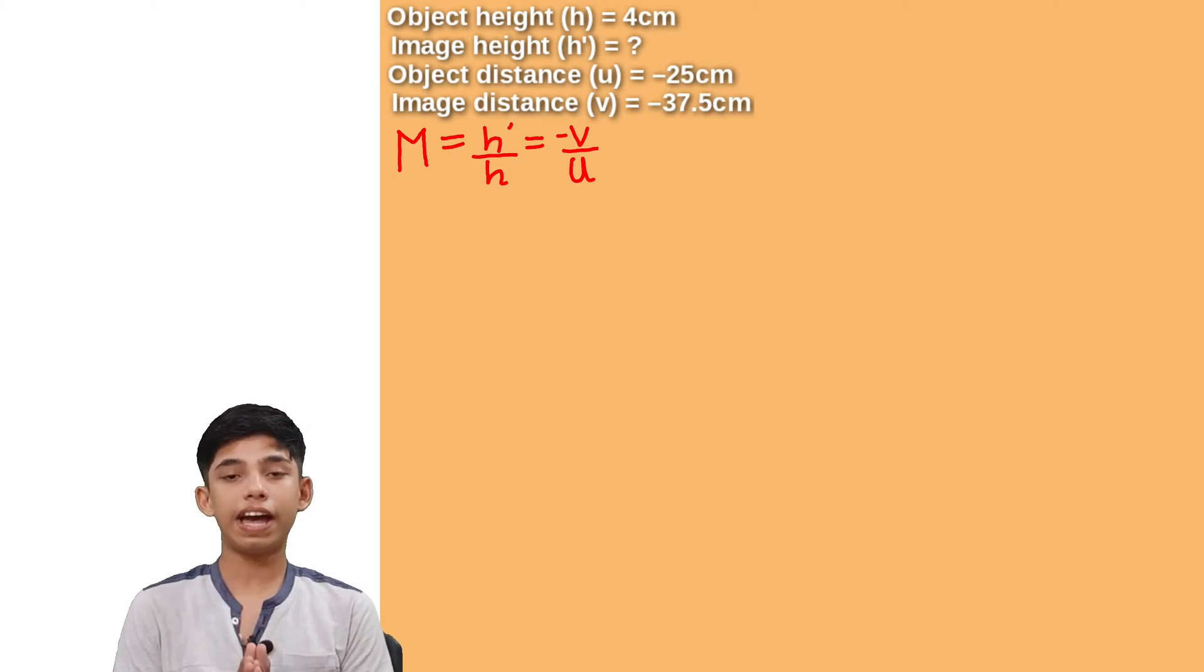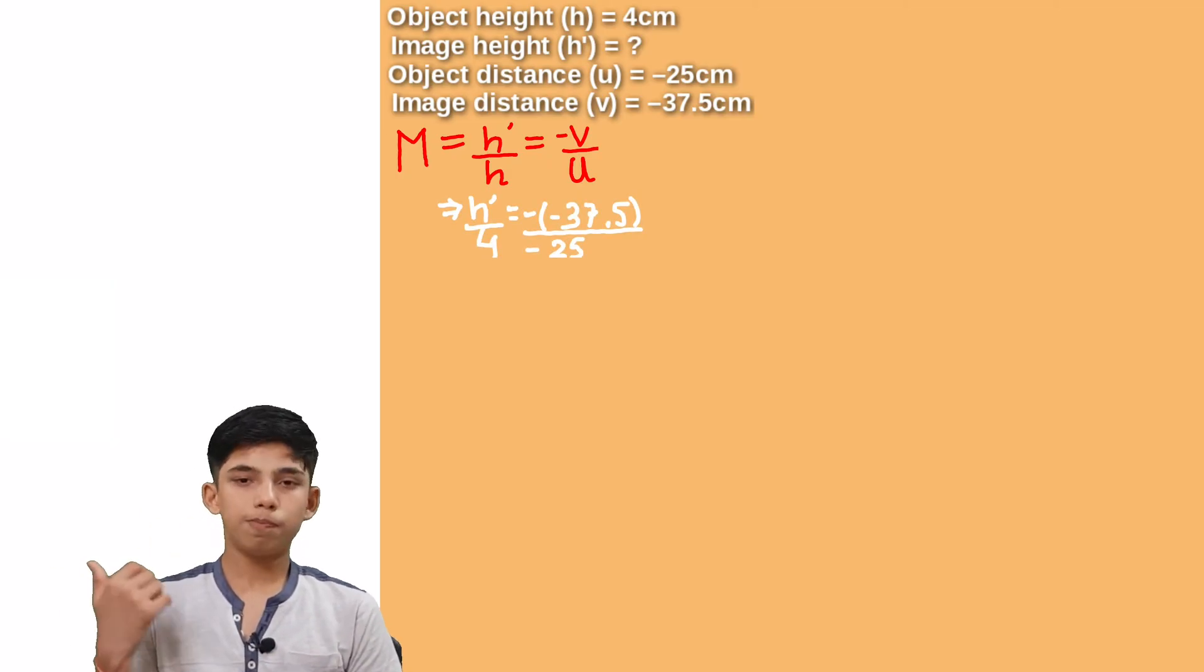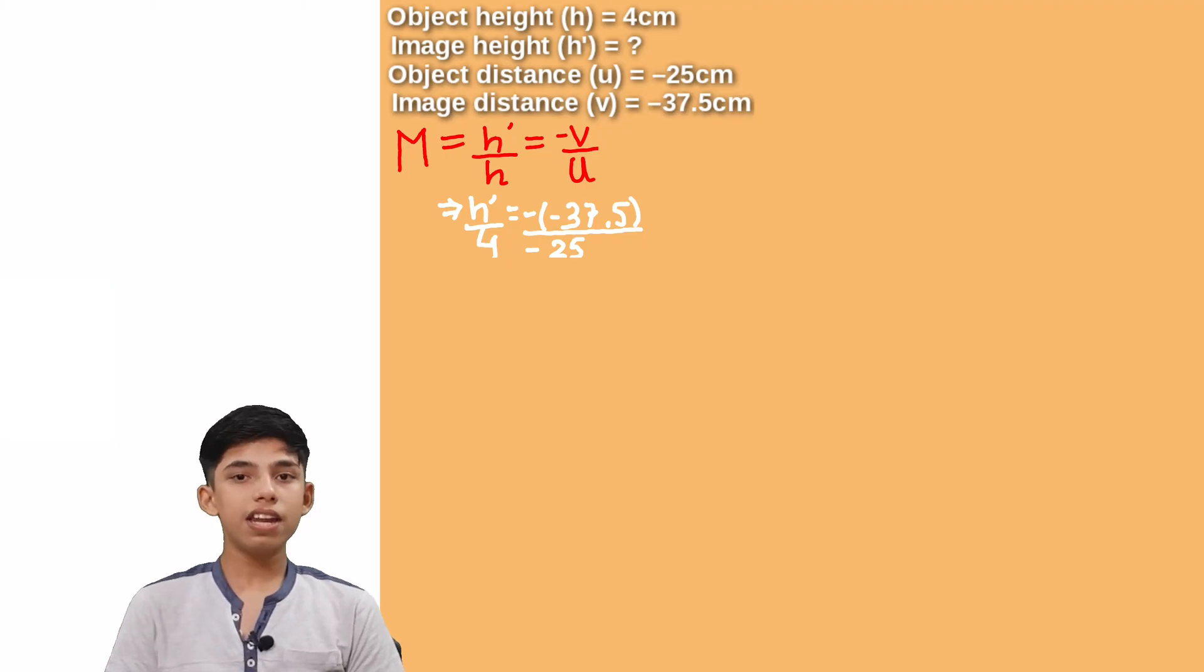Now what we have? We have h dash by 4 and it is plus 4. And then it is equals to minus 37.5 as the value of v and then minus 25 as the value of u. Don't forget those minus sign. They are very important.